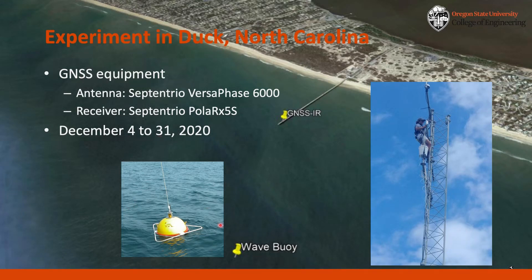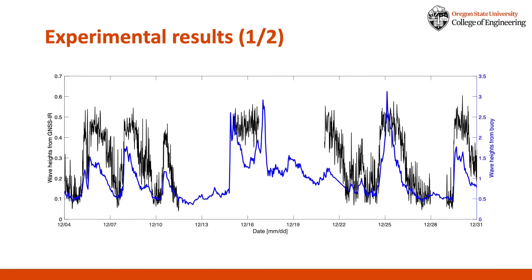Additionally, a nearby wave buoy was used to validate our wave height observed by GNSS IR. Here are the experimental results in Duck. In the plot, we computed the wave height using GNSS IR, which are displayed in the black lines, and the blue line is the wave height from the nearby buoy.